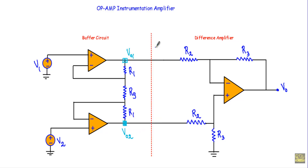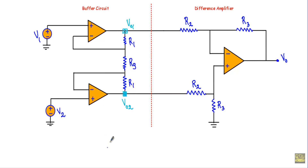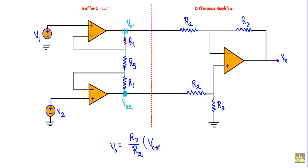When we have a difference amplifier like this with voltage V01 at one terminal and voltage V02 at the other terminal, we can calculate the output voltage using this formula. The output voltage VO will be equal to R3 divided by R2, multiplied by V02 minus V01. Let's call this equation number one — this is the output equation of the difference amplifier.